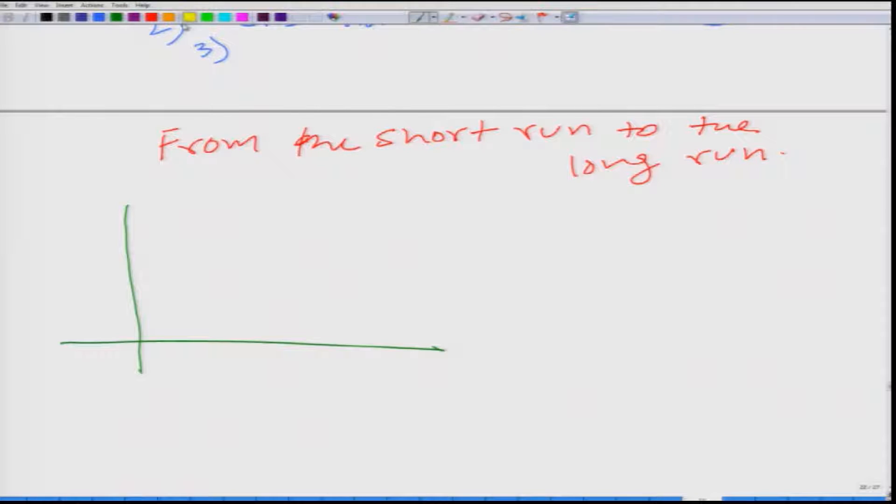Here is the marginal cost curve, then let us draw average variable cost curve. This is marginal cost curve and here we will have average total cost or average cost curve. And the marginal cost curve is clearly this particular part, the upward sloping part of the marginal cost curve, but this we have done.